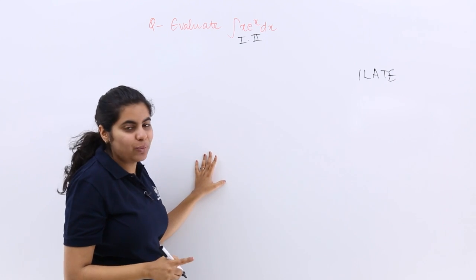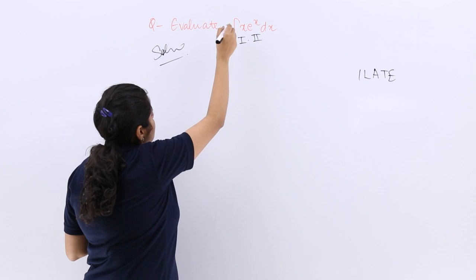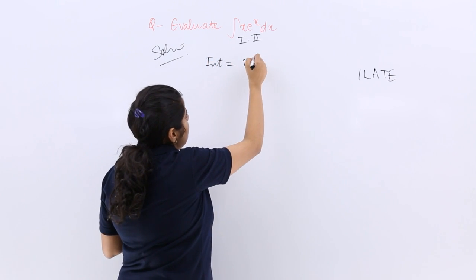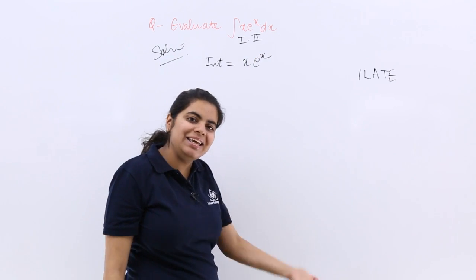Now I am not writing the formula. Many questions have been done, so directly I am doing it. So the solution is what? The integration would be, I and T I am writing in short, first function into integration of second. So integration of e raised to the power x is e raised to the power x.